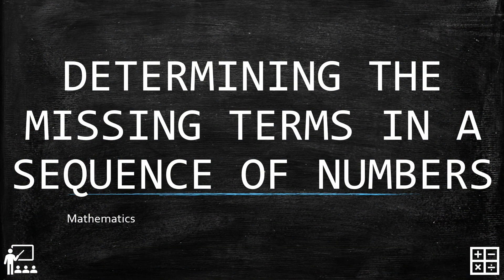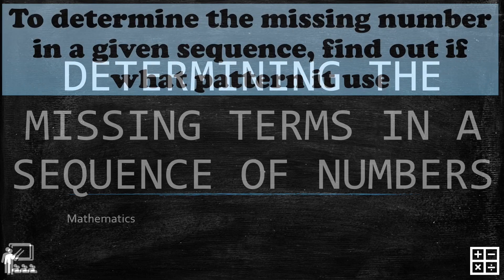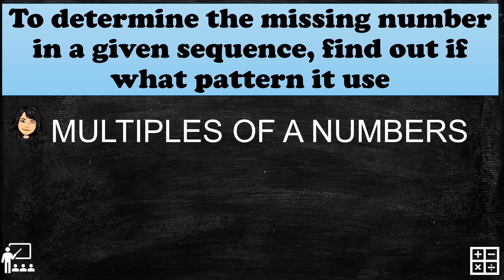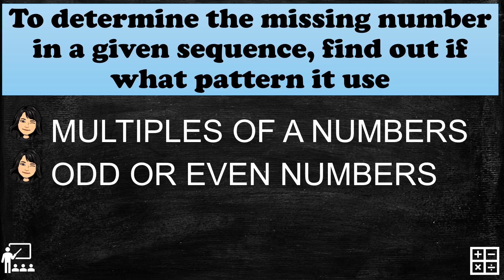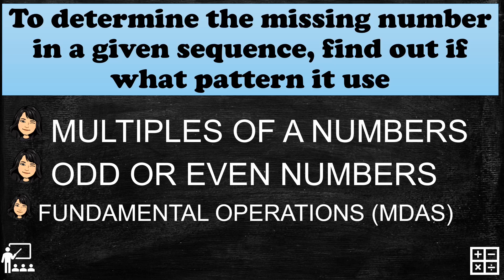This video lesson is about determining the missing terms in a sequence of numbers. To determine the missing number in a given sequence, find out what pattern it uses. These are the examples of patterns used: multiples of a number, odd or even numbers, and fundamental operations which are multiplication, division, addition, and subtraction.